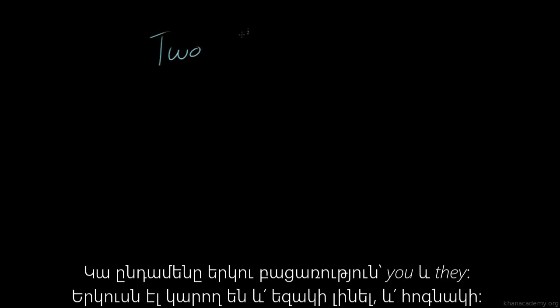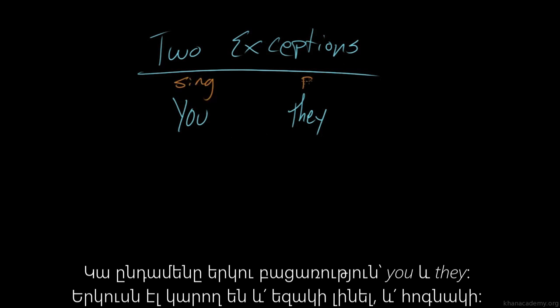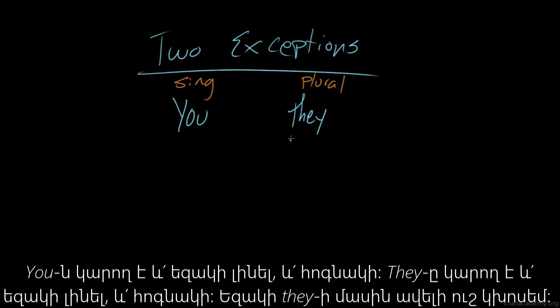There are two exceptions to this. And they are you and they. And either one can be singular or plural. So there can be a singular you or a plural you. There can be a singular they or a plural they. And I'll explain more about singular they later.